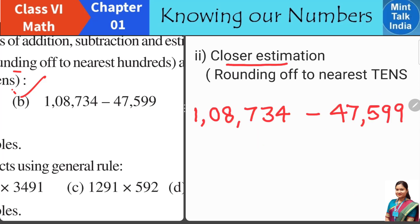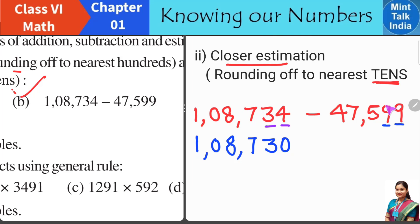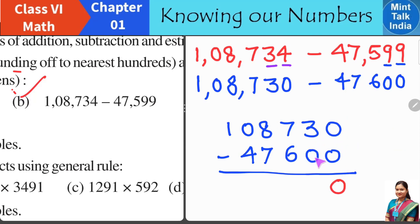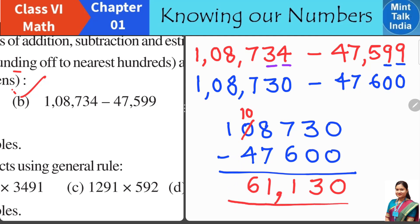For closer estimation, we round to the nearest tens by observing the ones and tens digits. The first number's ones digit is less than 5 so no change to tens. For the second number, rounding up gives a carry: 5 becomes 6 in the tens place. Subtracting column by column with borrowing: 0 minus 0, 3 minus 3, 7 minus 1, 8 minus 1, 0 minus 0 with borrowing, 6 minus 1, and 1 minus 0. The closer estimated answer is 61130.